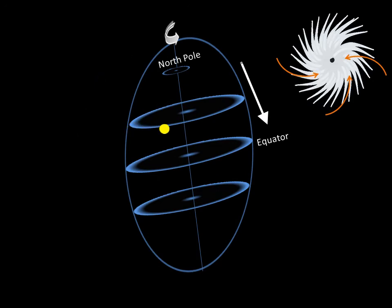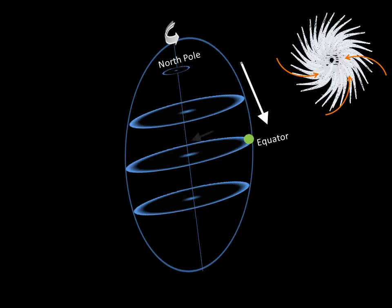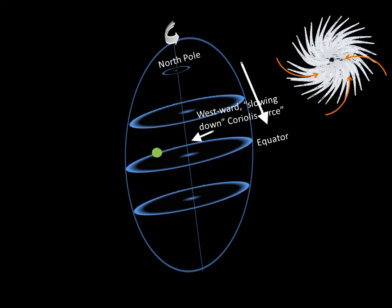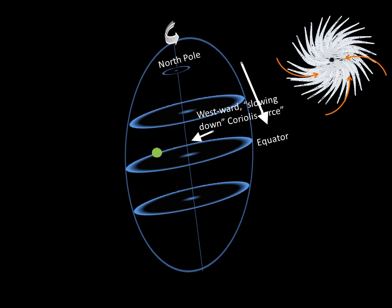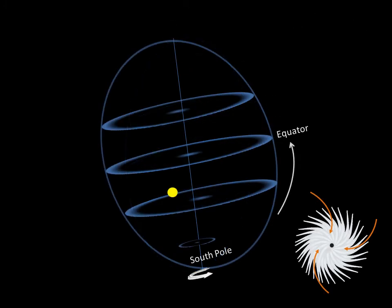The direction of spin of the storm is also determined by the phenomenon of deflection of air mass. Anti-clockwise in the northern hemisphere and clockwise in the southern hemisphere.